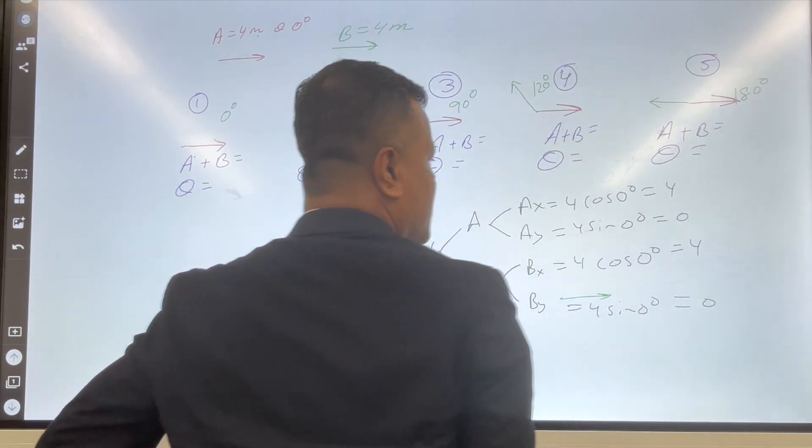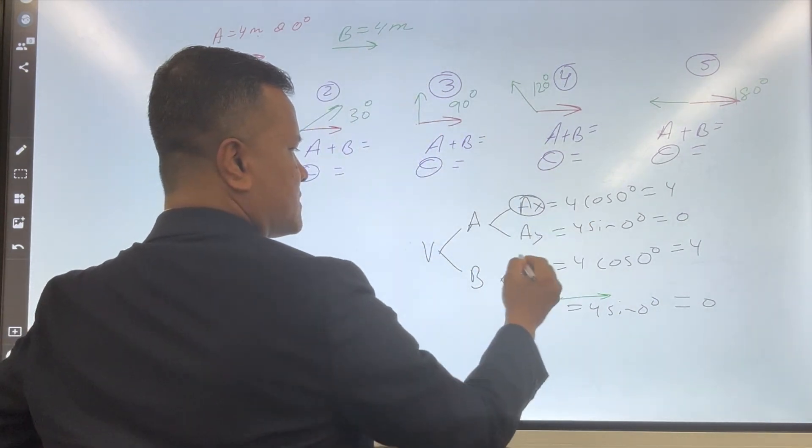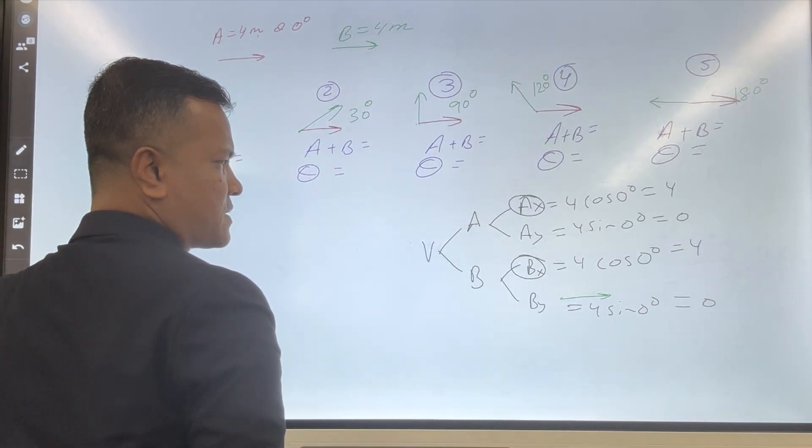4 cosine zero degree and 4 sine zero degree. So this one is 4, this one is 0, this one is 4, this one is 0. Now we're going to separate those numbers with respect to their direction.